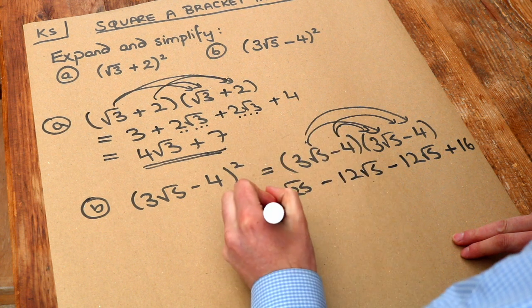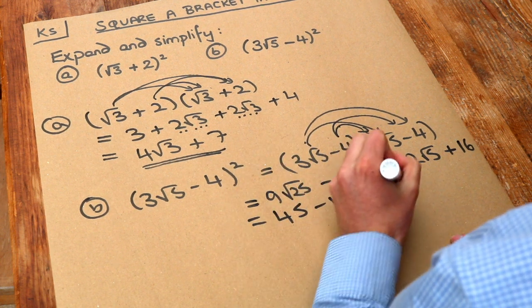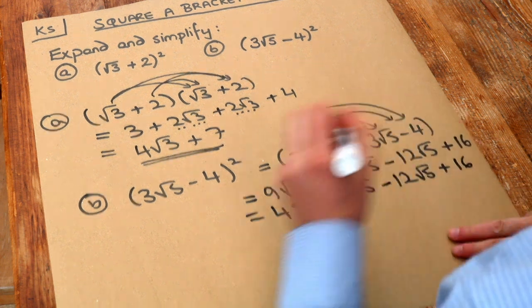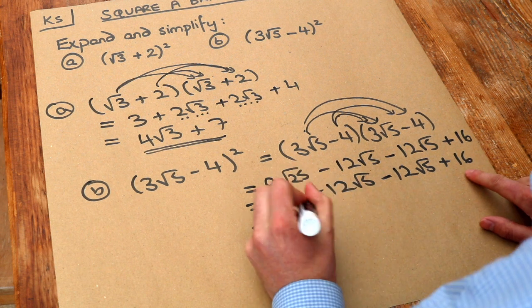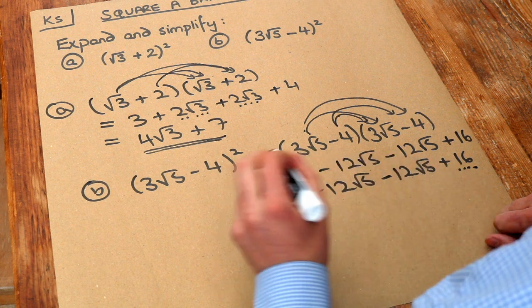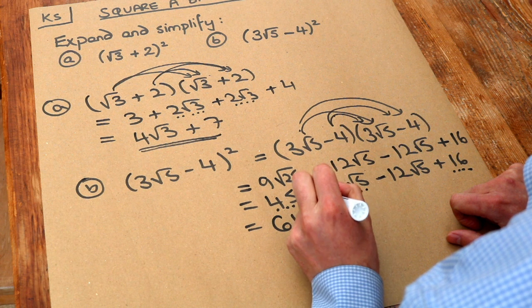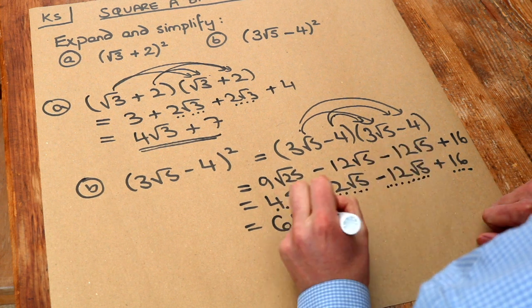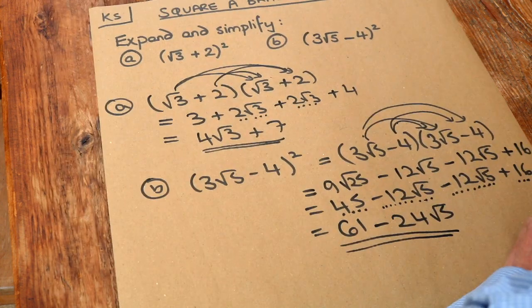9 times 5 is 45. Now let's collect the non-surd terms together: we've got 45 and 16, and 45 plus 16 is 61. Then we collect the surd terms together: we've got negative 12 lots of root 5 minus 12 lots of root 5, which is minus 24 lots of root 5. So the final answer is 61 minus 24 root 5.